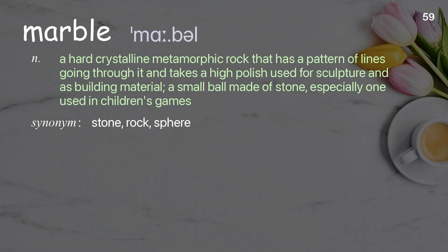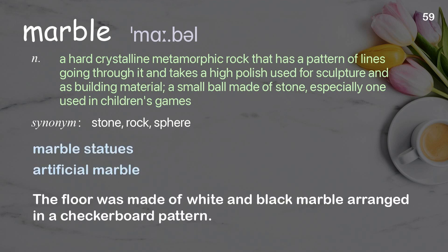Marble: A hard crystalline metamorphic rock that has a pattern of lines going through it and takes a high polish, used for sculpture and as building material; a small ball made of stone, especially one used in children's games. Examples: marble statues, artificial marble. The floor was made of white and black marble arranged in a checkerboard pattern.